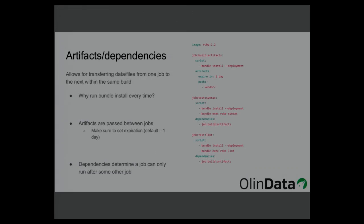An artifact is a bunch of files created by a job that can then be used in subsequent jobs throughout the pipeline. Why would we run bundle install every time? If you run bundle install with --deployment, it installs all gems in a vendor subdirectory where your Gemfile is. So we changed the script to use bundle install --deployment and then create artifacts from the vendor path.